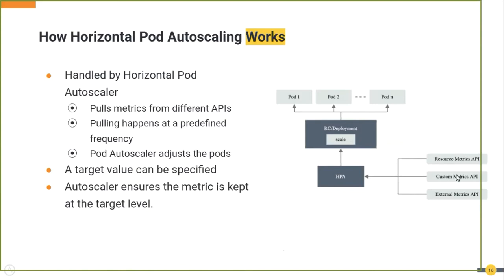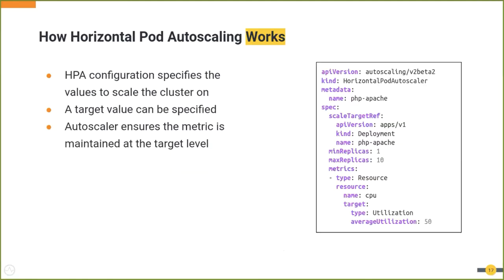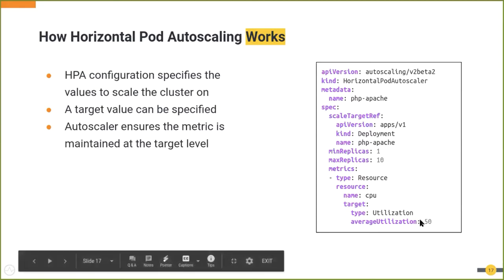As the diagram indicates, there are three types of metrics supported: resource metrics, which are pulled from the resource metrics API; custom metrics, which are pulled from the custom metrics API (usually implemented by an adapter); and external metrics, pulled from the external metrics API. What is shown here is an extract from the HPA configuration — it applies to a Kubernetes deployment, and in the metrics section the type is set to resource, CPU is set as the metric, and target utilization is set to 50.